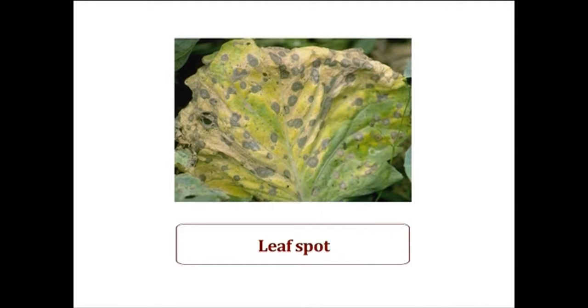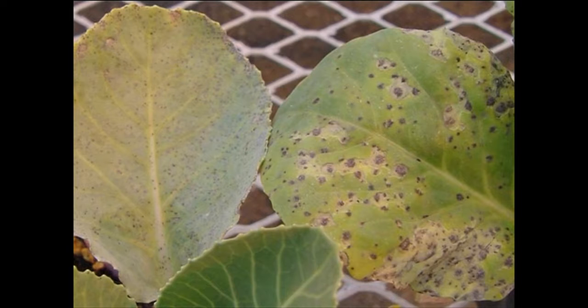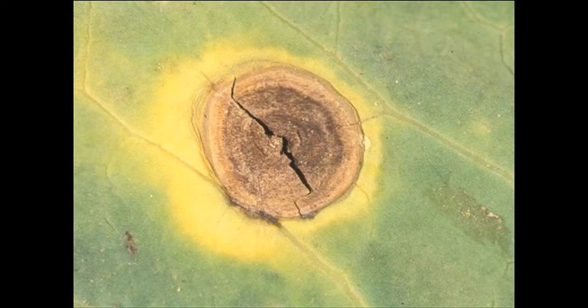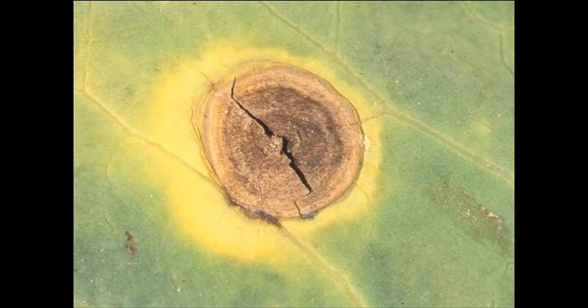The next disease is leaf spot. Symptoms appear as minute dark brown to black spots, which may enlarge by forming concentric rings. Each spot is surrounded by a yellow halo of chlorotic tissue.